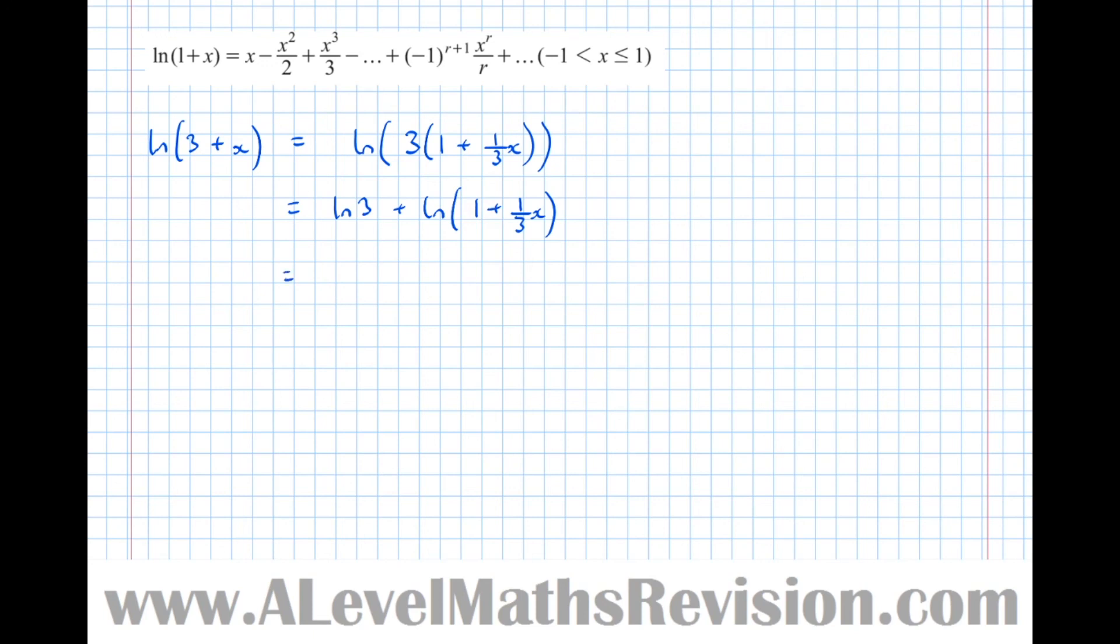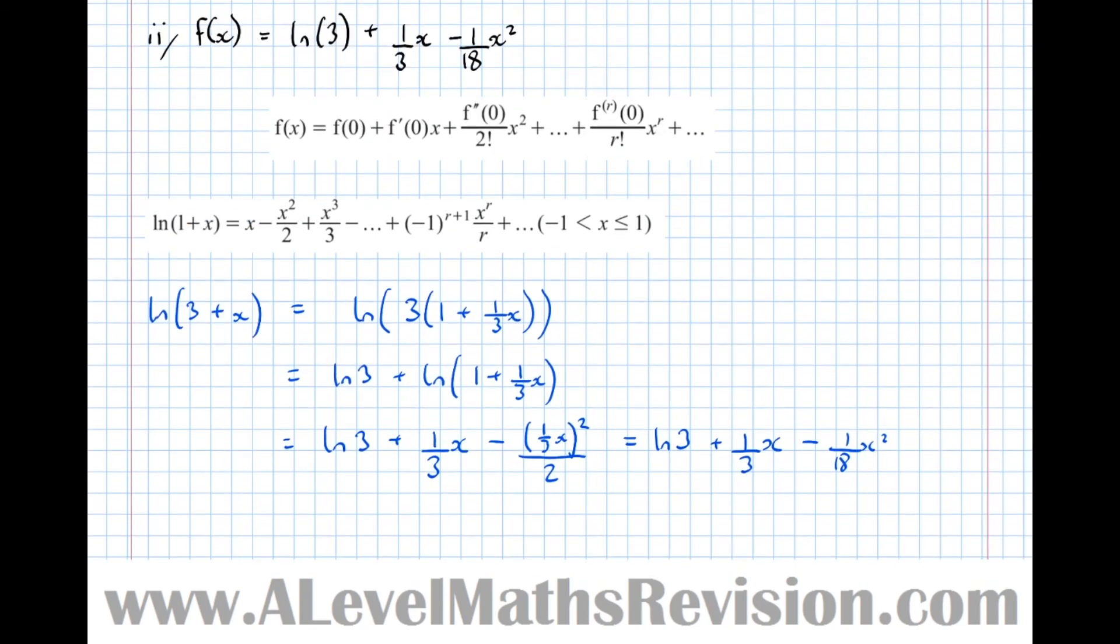So it equals log 3 plus, and we'll replace the x with a third x, so plus 1 third x, take, and again we'll replace the x with a third x, so 1 third x squared over 2, which is equal to log 3 plus 1 third x take 1 18th x squared exactly as we found before.